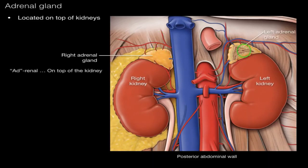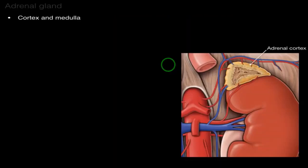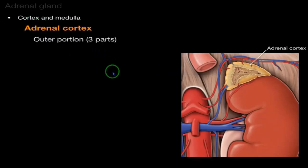Adrenal means on top of the kidney. These adrenal glands are also called suprarenal glands. The adrenal gland has two regions: cortex and medulla.